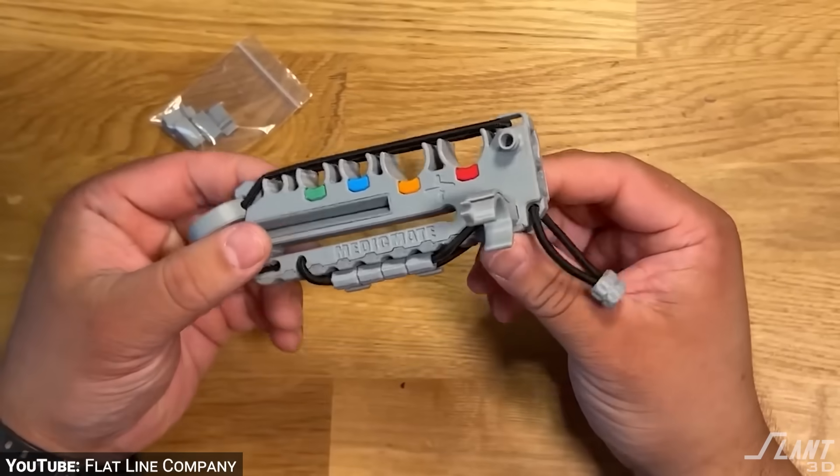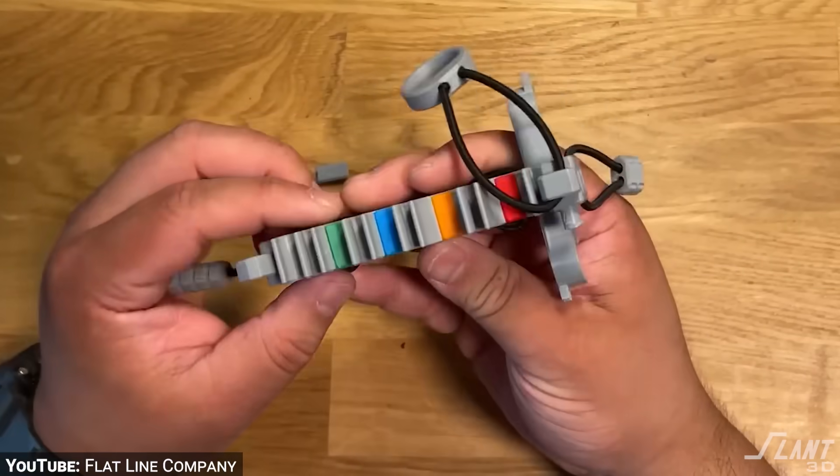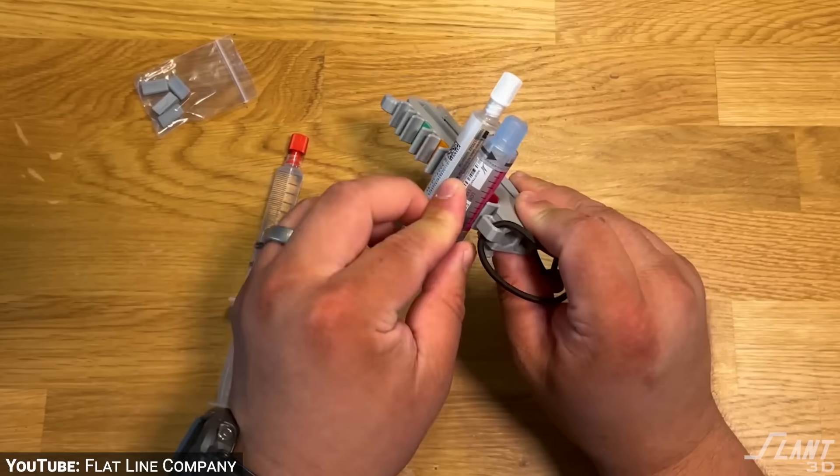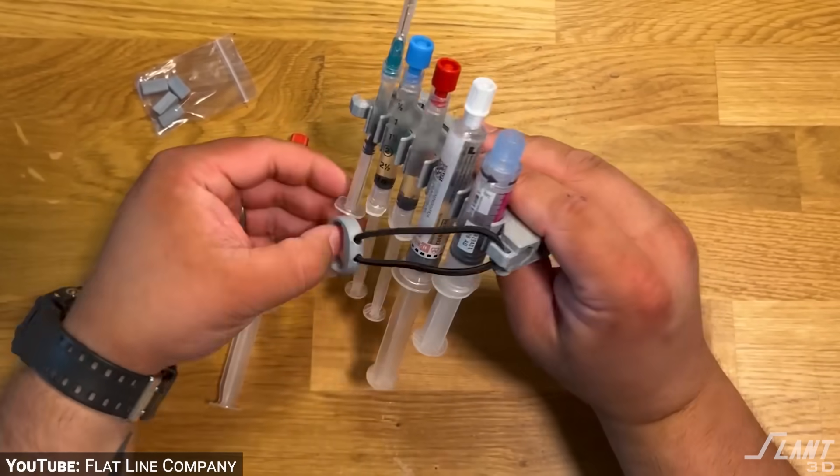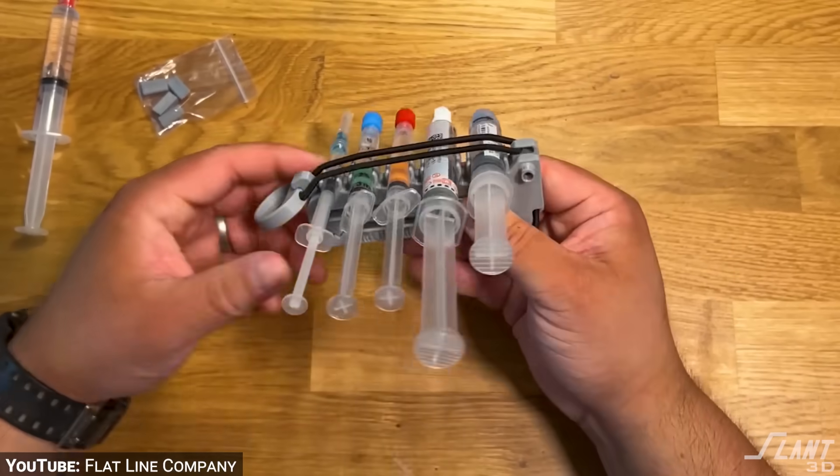Now that all the real paramedics out there are mad at me, I seriously want to go into the MedicMate. This is an awesome device that was designed by the Flatline Company up in Canada. It is designed to hold syringes basically anywhere you need them to be while you're working in the back of an ambulance or at a scene.